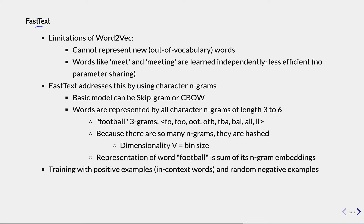FastText solves two main limitations of Word2Vec. First, Word2Vec cannot represent out-of-vocabulary words. If you have a word like 'Tiffany's' that didn't occur in your original training set, Word2Vec doesn't have an embedding for it and would just give you an error or a blank. Second, for words like 'meet' and 'meeting', Word2Vec learns two different embeddings independently, without sharing any weights between them, even though they share structure.